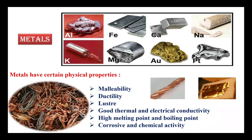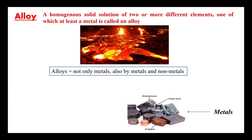Now we are going to see about alloys. Usually a metal cannot be dissolved in ordinary solvents, but a metal can be dissolved with another metal in the molten state. This makes the topic of alloys. An alloy is a homogeneous solid solution of two or more different elements, at least one of which is a metal. This homogeneous solid solution is formed by heating two or more metals and non-metals to a higher temperature so they reach a molten state and combine.